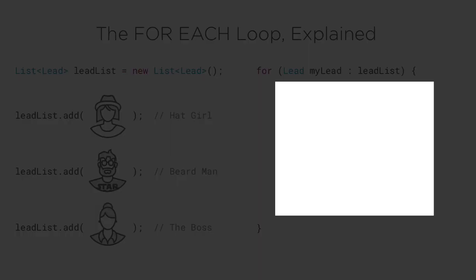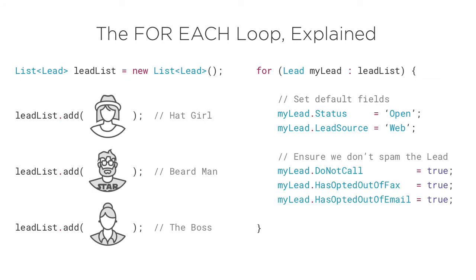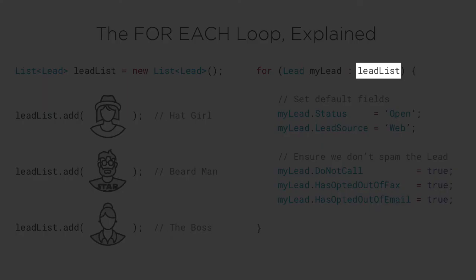Now inside our loop, we have our code block that we want to repeat. Here, we're setting default field values on our lead. And here, we set some anti-spam values on the lead. Basically, this loop sets default field values and anti-spam values for all leads in the given collection.